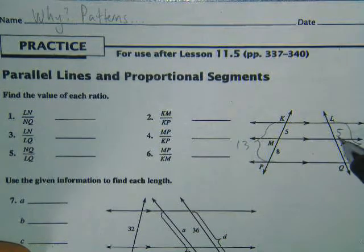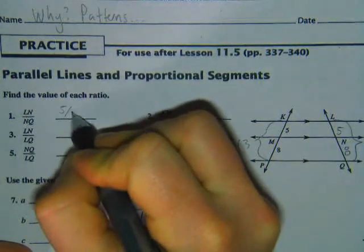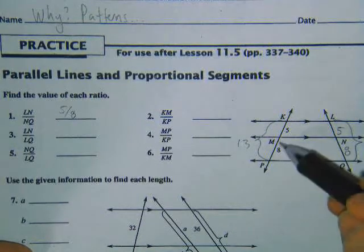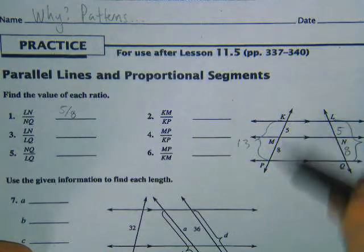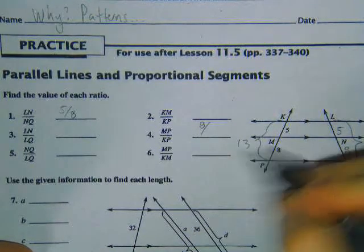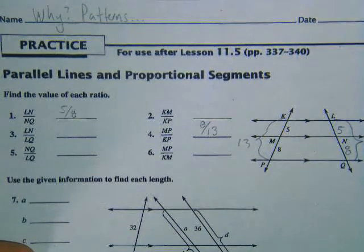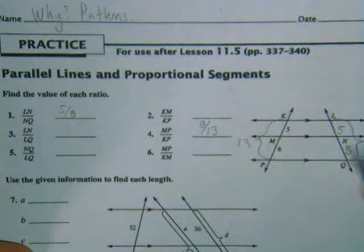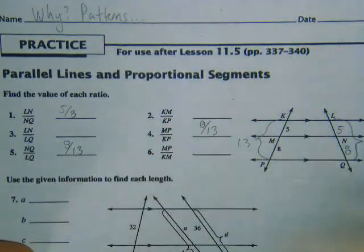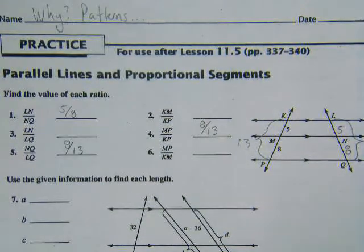So, LN to NQ. LN is 5. NQ is 8. MP to KP. MP is 8. KP is the whole thing, is 13. NQ to LQ. NQ is 8. LQ is 13. There are a few of those.